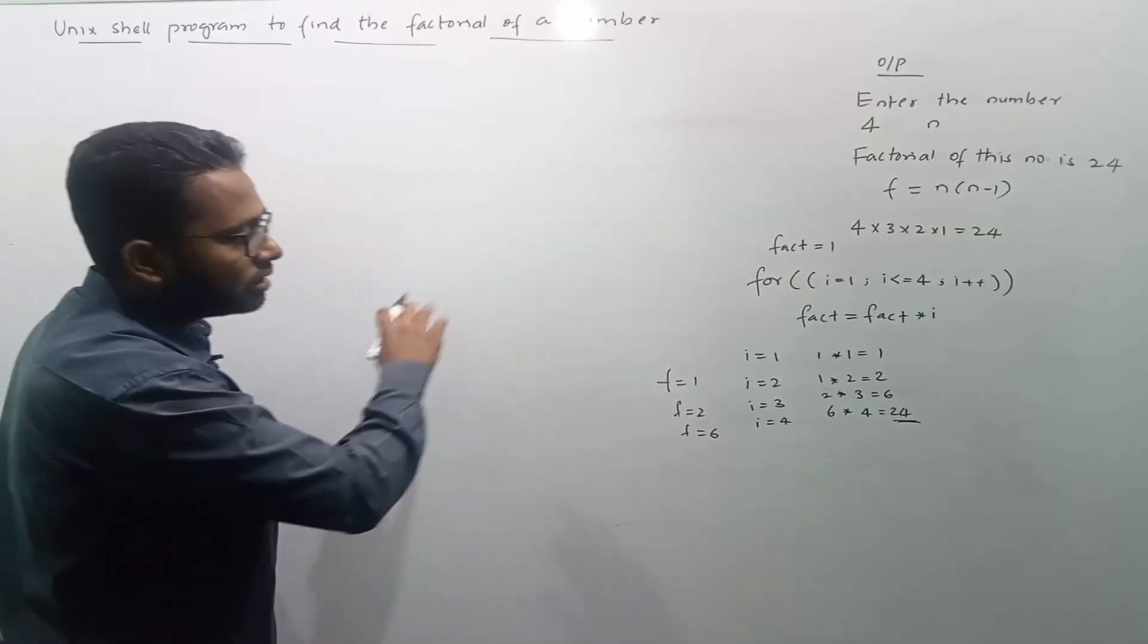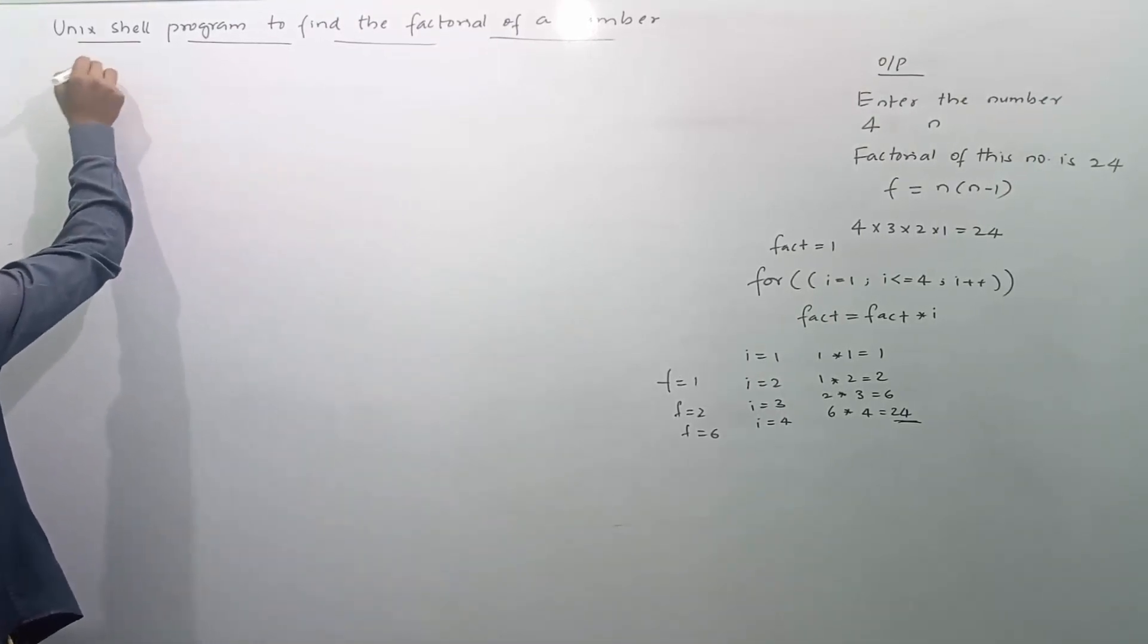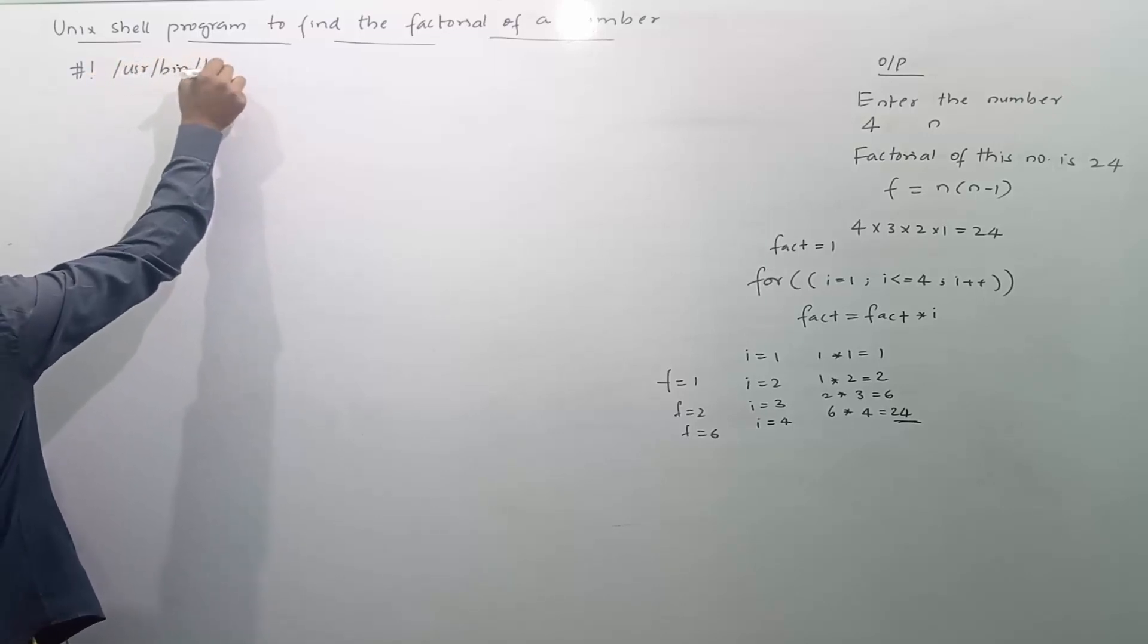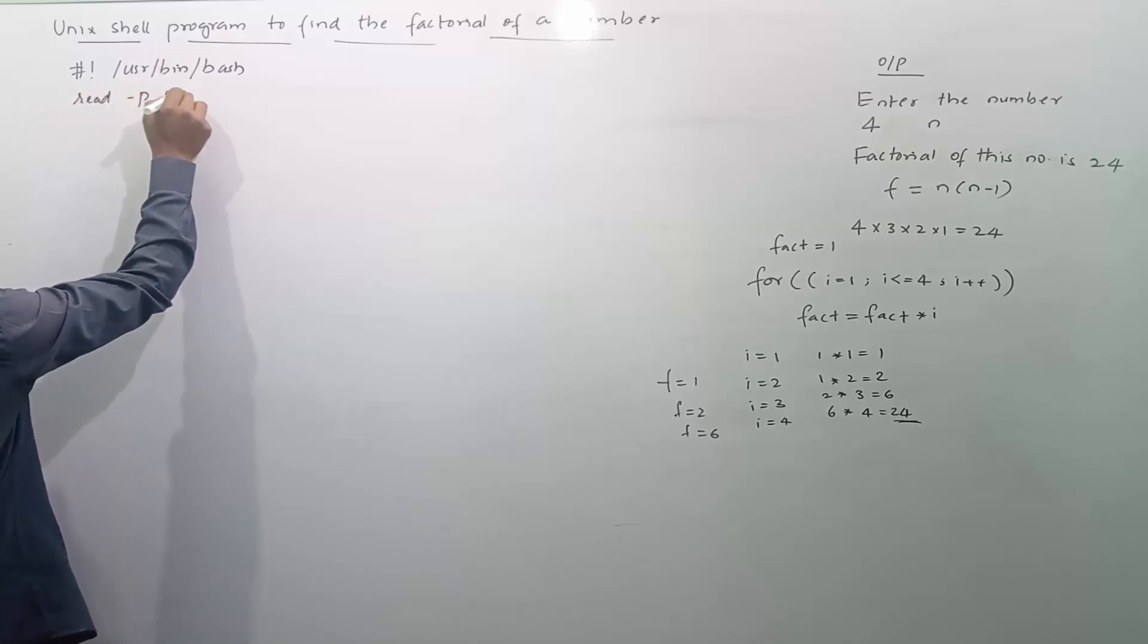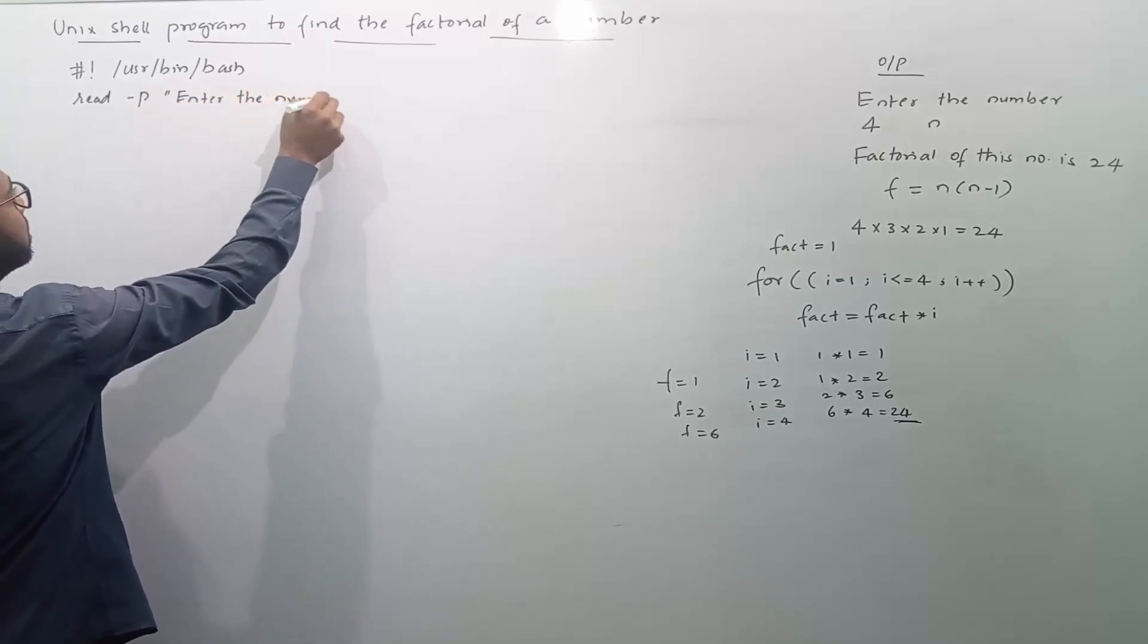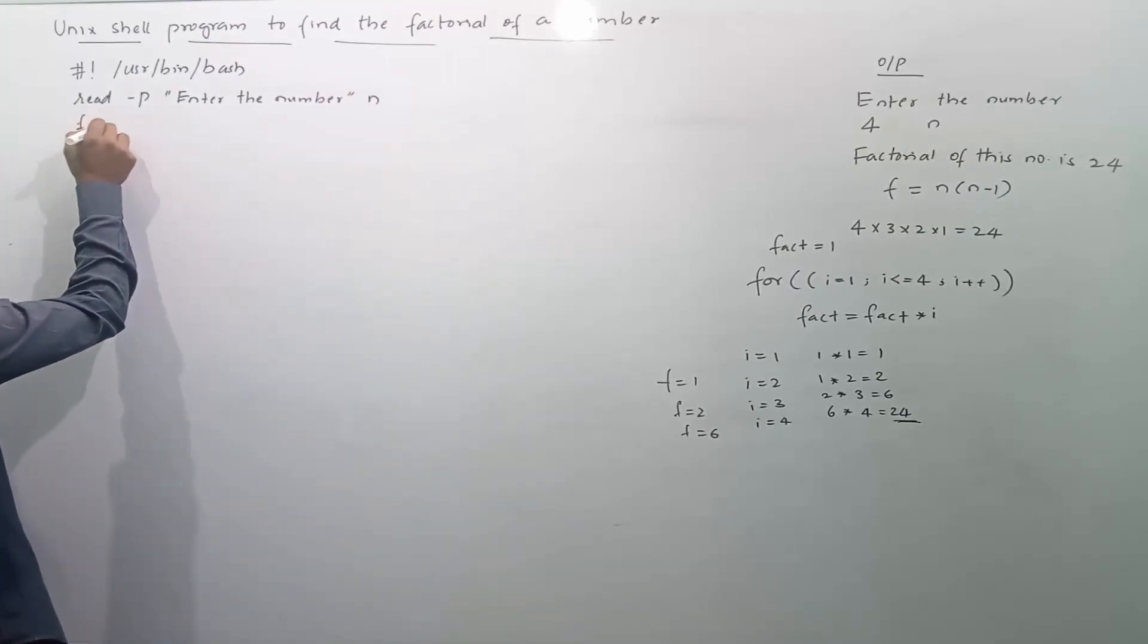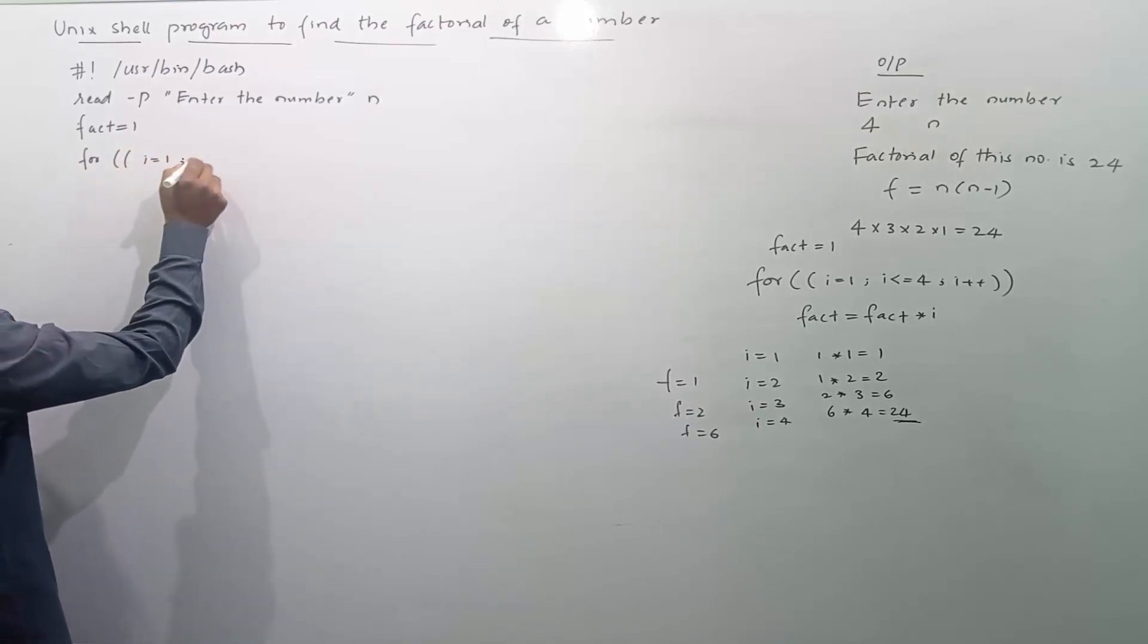So I will use that concept to write the shell program. I will start the program with the shebang statement usr bin bash read space hyphen p space double quote enter the number let us say n.